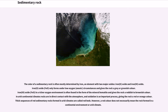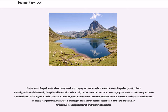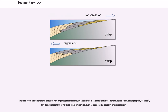Thick sequences of red sedimentary rocks formed in arid climates are called red beds. However, a red color does not necessarily mean the rock formed in a continental environment or arid climate. The presence of organic material can color a rock black or gray. Organic material is formed from dead organisms, mostly plants. Normally such material eventually decays by oxidation or bacterial activity. Under anoxic circumstances, however, organic material cannot decay and leaves a dark sediment rich in organic material. This can occur at the bottom of deep seas and lakes. Dark rocks, rich in organic material, are therefore often shales.